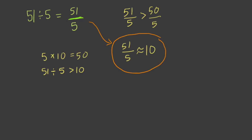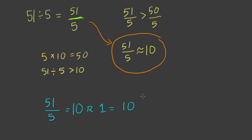The precise answer is quite easy to find because 51 divided by 5 is equal to 10 with a remainder of 1. This means that 5 goes into 51 ten times and 1 out of 5, or 1 fifth of a time. And that's the answer.